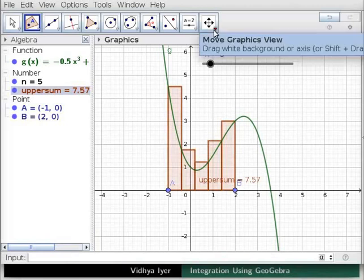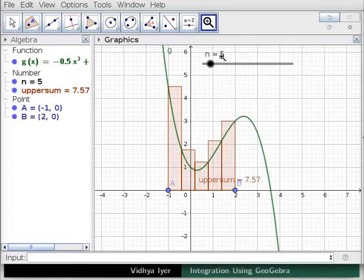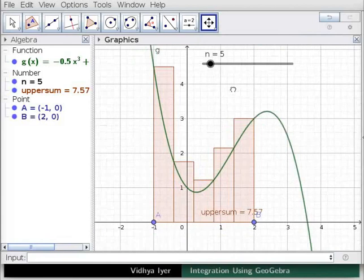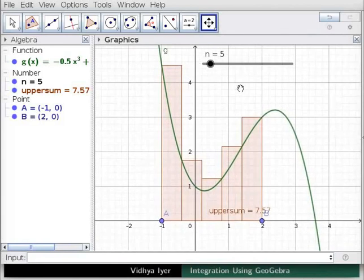Under move graphics view, click on zoom in and click in graphics view. Again, click on move graphics view and drag the background to see all the rectangles properly. The upper sum area under the curve adds the area of all these rectangles. It is an overestimation of the area under the curve because some portion of each rectangle extends above the curve.